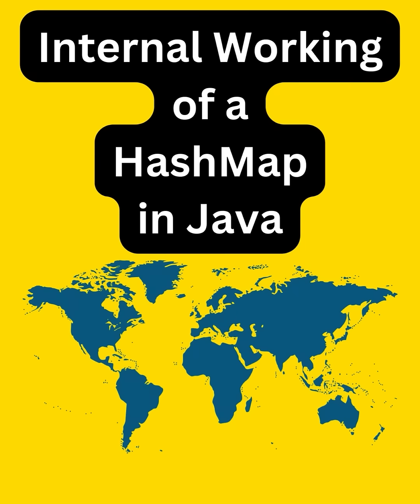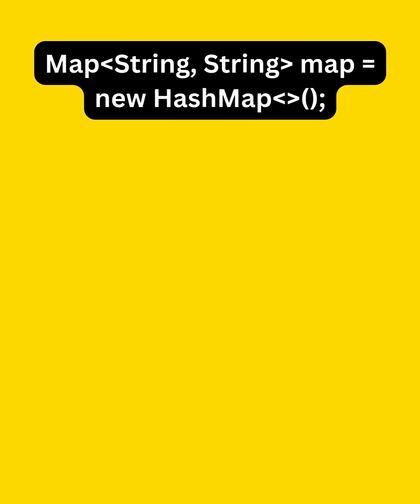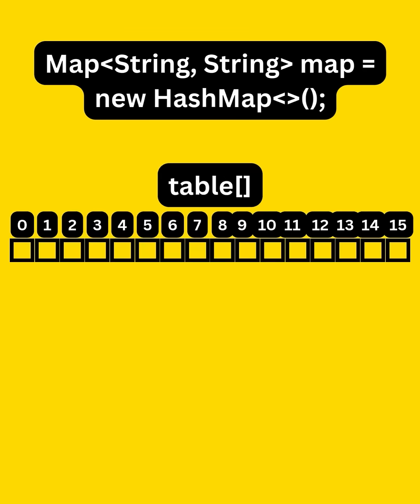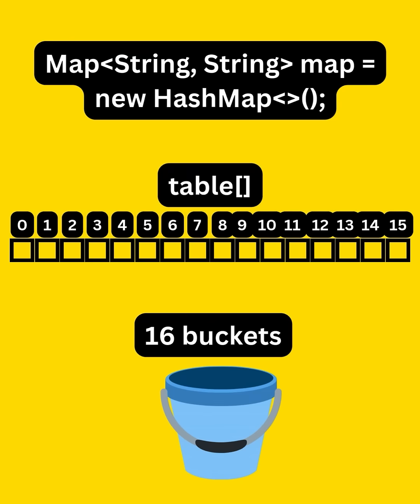Today, I thought to share with you how the HashMap works internally in Java. So when we write map equals to new HashMap, it actually creates an array internally of default size 16. Let's call it the table array. Every slot of this array is referred to as a bucket, and the bucket is a place where we store key-value pairs.